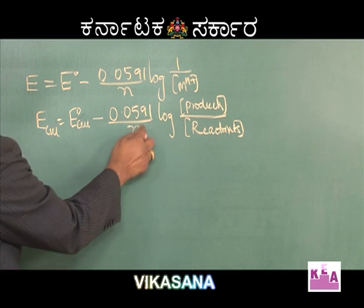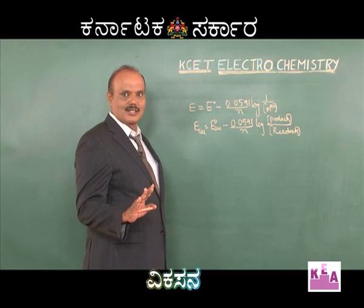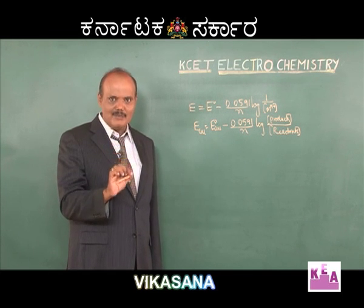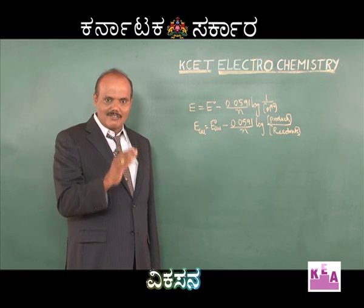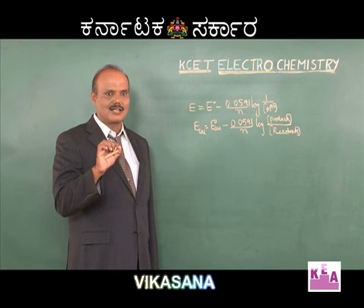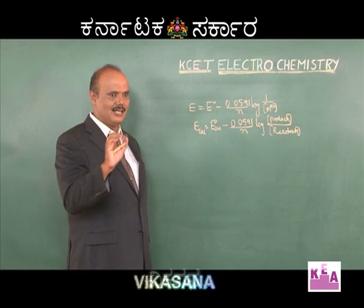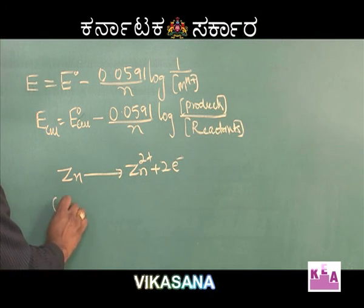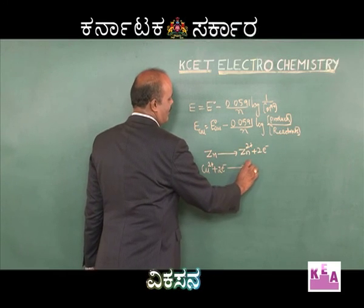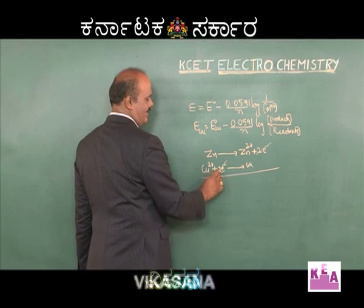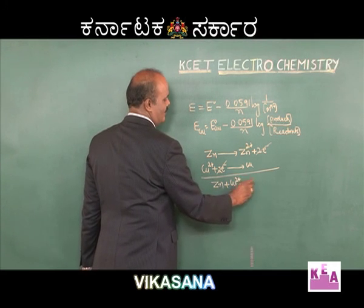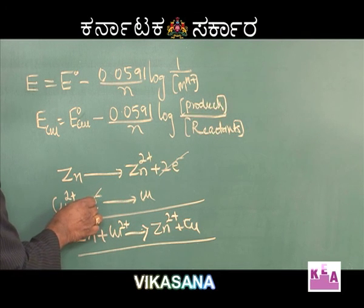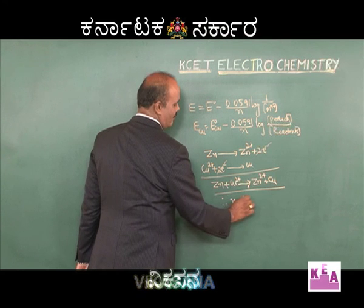The major issue is how to calculate the value of N. To find N, write the oxidation and reduction half-reactions separately, equalize the number of electrons in both, and then add them to get the net cell reaction. For example, in the Daniel cell, zinc undergoes oxidation to form Zn²⁺ by losing 2 electrons; Cu²⁺ undergoes reduction by gaining 2 electrons. When added, the 2 electrons cancel, giving Zn + Cu²⁺ → Zn²⁺ + Cu. The number of electrons cancelled equals N; therefore N = 2.